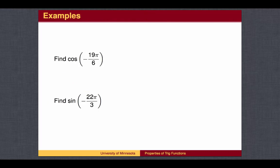We can also add full circles to find values for sine and cosine. In the first example, we can add a full circle of 2π, which is 12π over 6, to arrive at negative 7π over 6. You may count around the unit circle backward to find this value, or you may wish to add another full circle so that the angle is positive. The cosine of negative 19π over 6 equals the cosine of 5π over 6, which is negative square root 3 over 2.